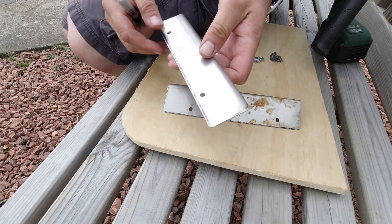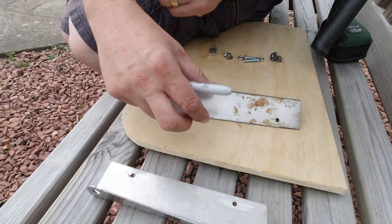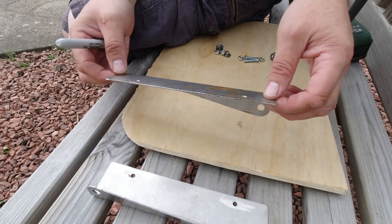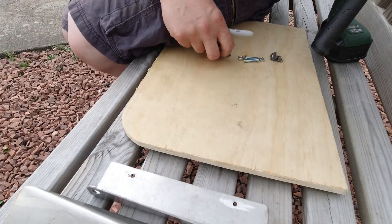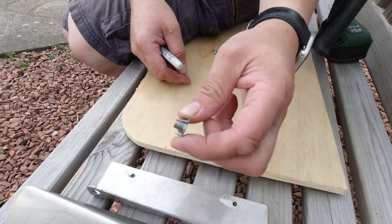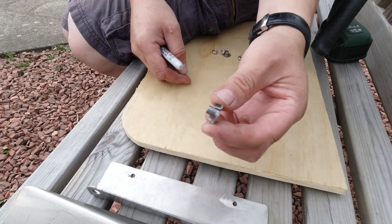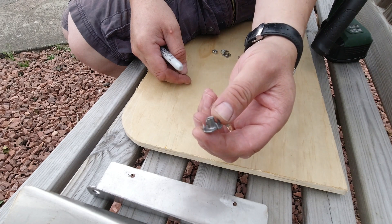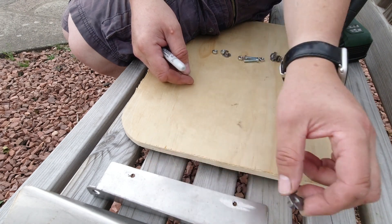I've got this baseboard for my seat, and I'm going to use these things - I don't even know what they're called, I'd call them furniture nuts - but they're kind of a captive nut that you use in wood. These are M6 and I'll show you how I'm going to use them.